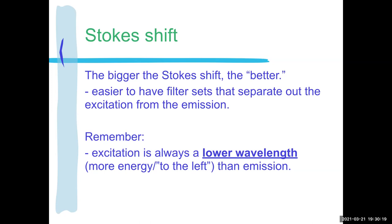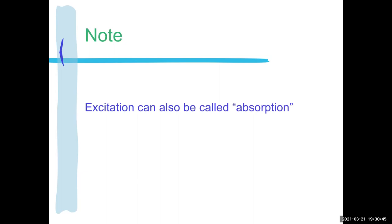Excitation is a lower wavelength, more energy — excitation is to the left, emission is to the right. Excitation is more towards the 400 end and emission is more towards the 700 end of the visible light spectrum. Sometimes people call excitation 'absorption,' so you might see 'absorption and emission.' Most people say 'excitation and emission' — again, it's all correct, it's all the same thing.